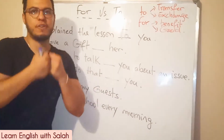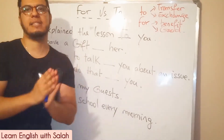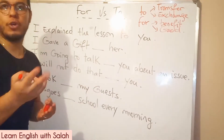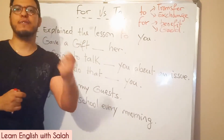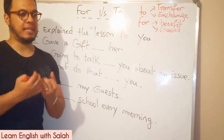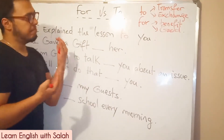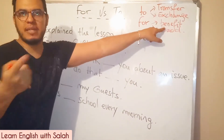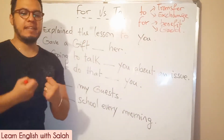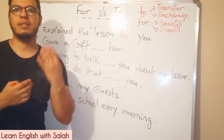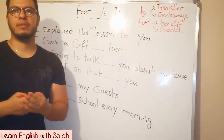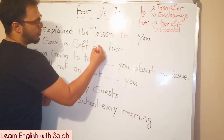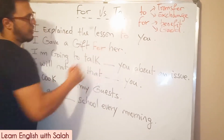I gave a gift — is it 'to her' or 'for her'? It is something beneficial for somebody else. So: I gave a gift for her. 'This gift is for you.' So we put 'for her'.